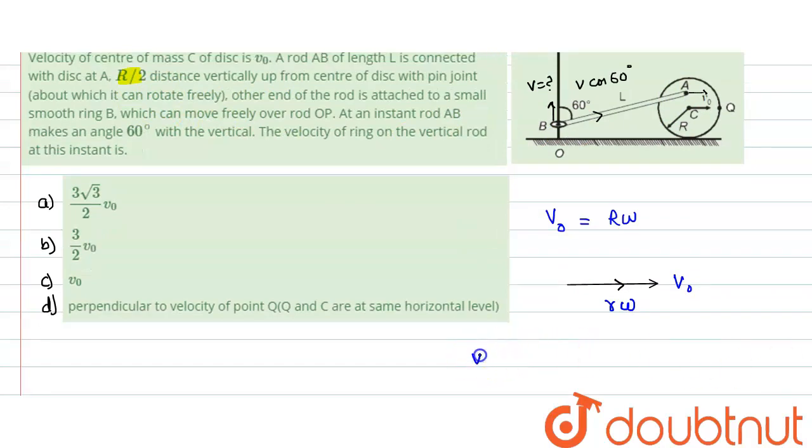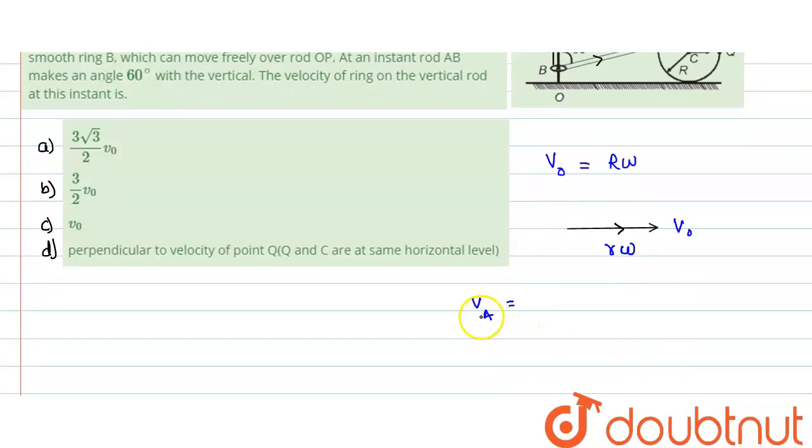So we can say that velocity of point A would be rω plus v₀. From here we can get the value of ω. ω equals v₀ divided by R.